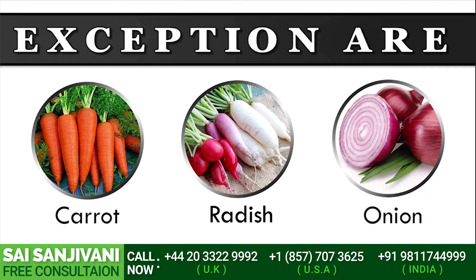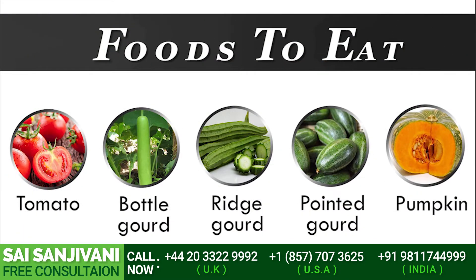However, among tuberous/root vegetables there are three exceptions: onion, radish, and carrot — these can be taken by kidney failure patients. Any vegetable grown as a fruit on a plant or creeper can also be taken without leaching, such as cucumber, snake gourd, ridge gourd, bitter gourd — any vegetable from the cucumber family — along with tomato, brinjal, and okra, because all these contain potassium in lesser amounts.